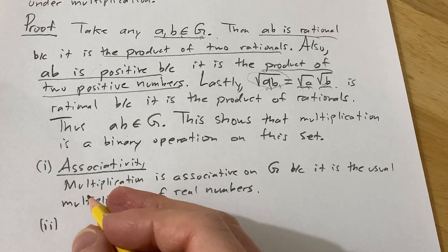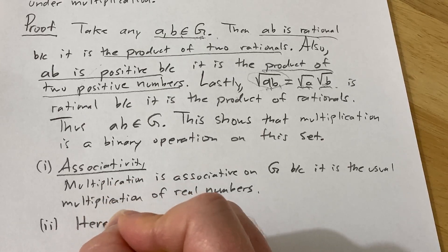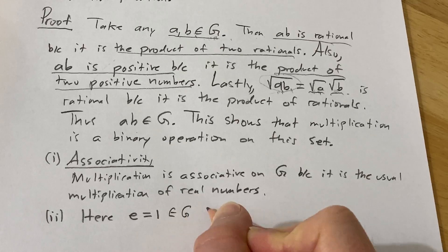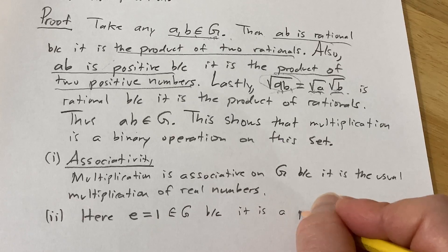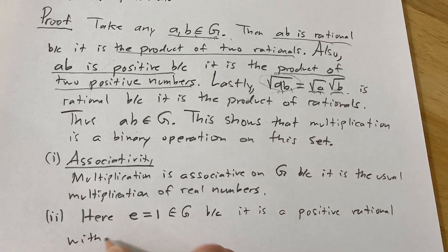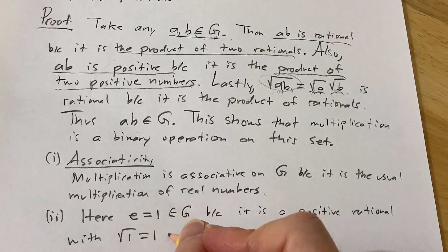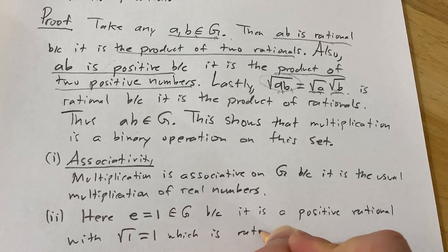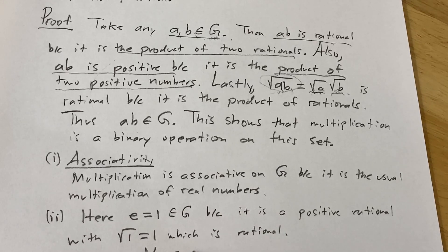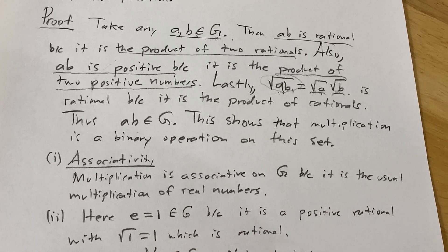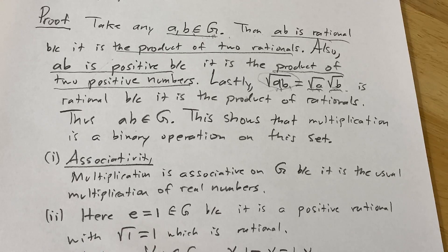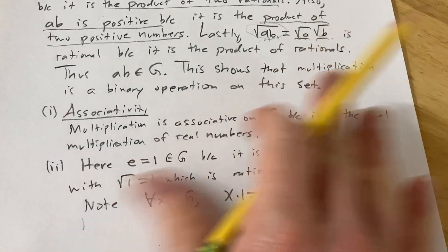The second thing we have to verify is the existence of an identity element. Let e = 1. Note that 1 is in G because it is a positive rational with the square root of 1 equal to 1, which is rational. For all x in G, we have x·1 = x = 1·x, so 1 is the identity.